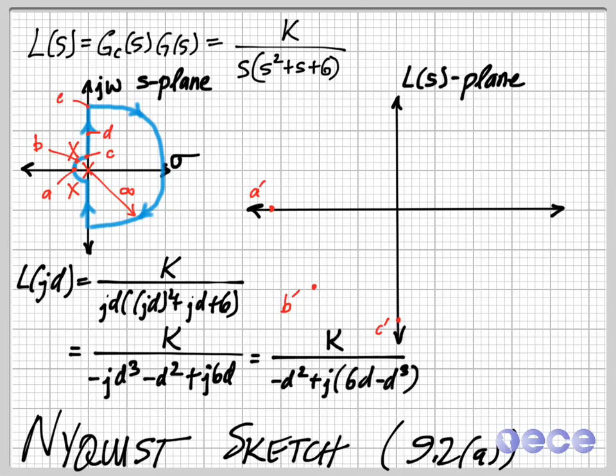And I end up with now the ability to have only a real or imaginary piece by finding the part of this equation that is equal to 0. So if I can make J times 0, then I'm going to have only a real component at K over minus D squared. So that happens at a value of 6D minus D cubed equal to 0. So the values where this happens are D equal to 0 and plus or minus square root of 6.